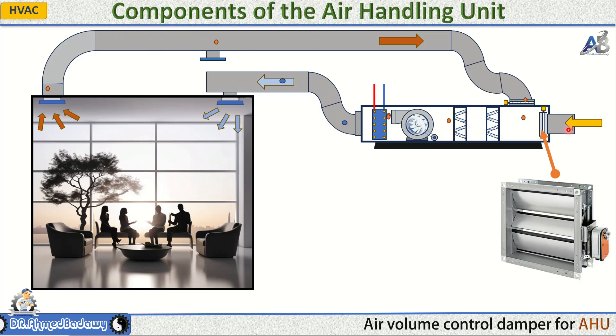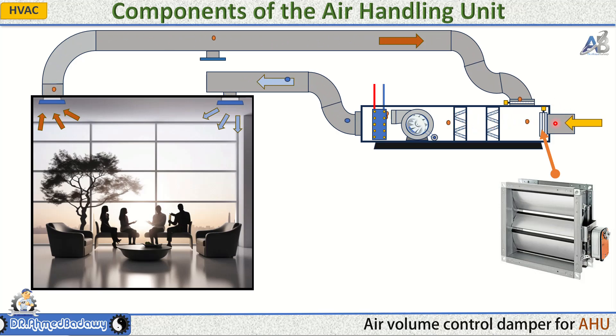2. Dampers: Moveable plates or valves used to control airflow and pressure within the AHU and ductwork. They are essential for directing air and managing the mixing of fresh and return air.